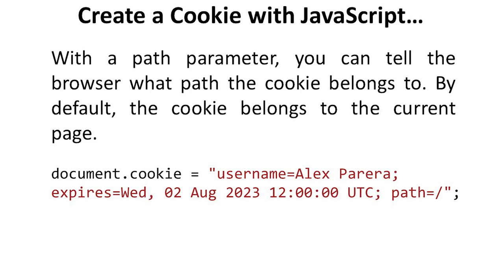Here, document.cookie = "username=Alex Pereira; expires=Wednesday, 02 August 2023 12:00:00 UTC; path=/". After the semicolon, we can provide the path — path equals backslash — followed by the closing double quotes and semicolon.